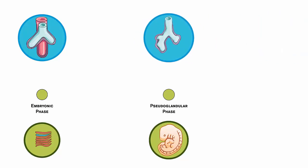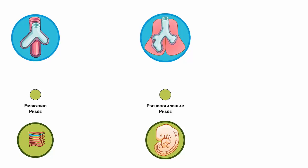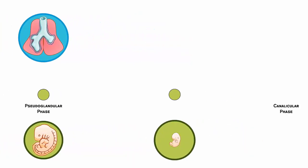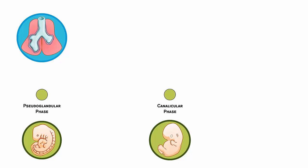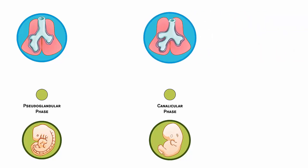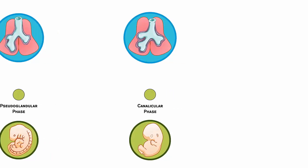Each bud forms an independent respiratory unit enveloped by capillary vessels that deliver blood to the lungs for oxygen. At approximately 25 weeks of gestational age is the canalicular phase, which establishes the air-blood barrier that permits oxygen to enter the blood and carbon dioxide to exit via respiratory capillaries into the lungs for exhalation.